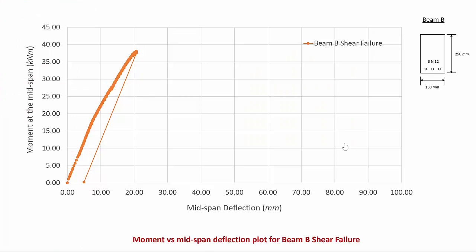Looking at the moment versus mid-span deflection for beam B, which failed in shear mode, we can see that as soon as the beam attained its maximum moment capacity of 38 kilonewton meters, the beam failed abruptly. There is no yielding and no yield plateau, unlike beam A which failed in flexure. The deflection at maximum bending moment is very small — only around 20 millimeters — making it a very brittle failure with no warning.